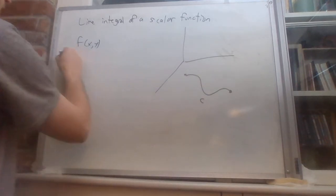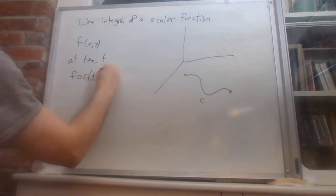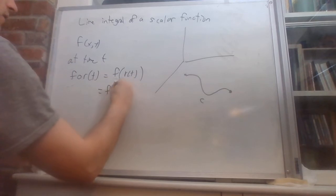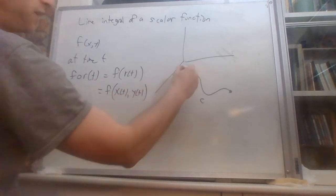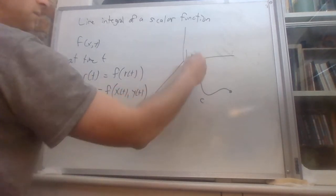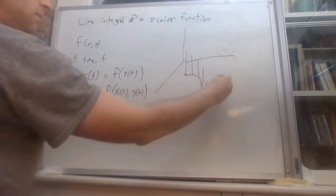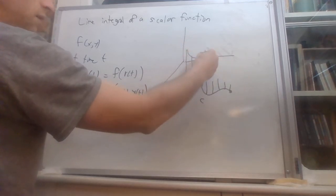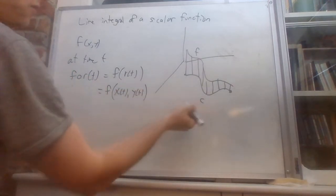So that at each time t, we have f of r of t equals f of x of t, y of t. At each time t, we get a height given by the function f, and we get a kind of curtain or a fence.